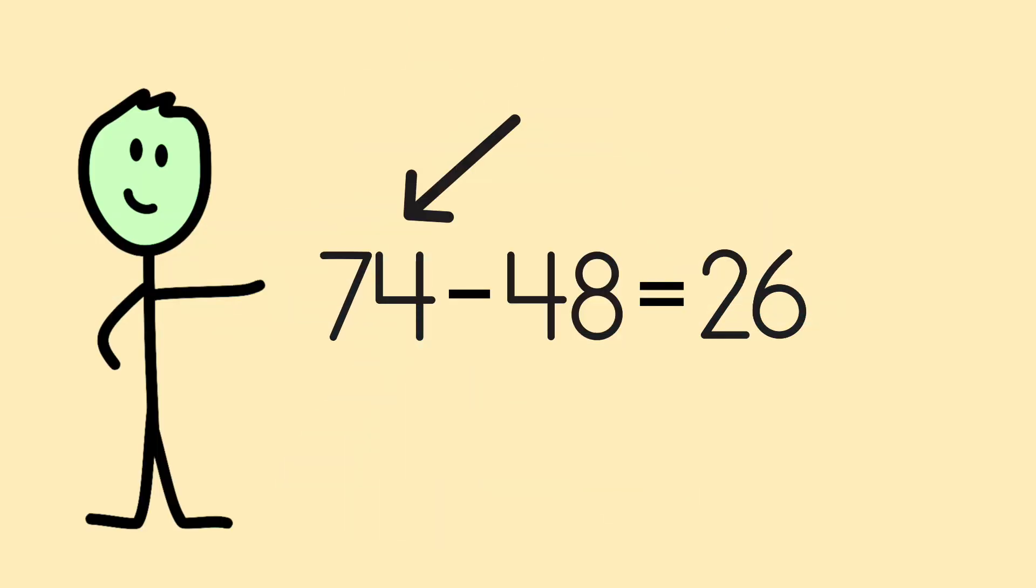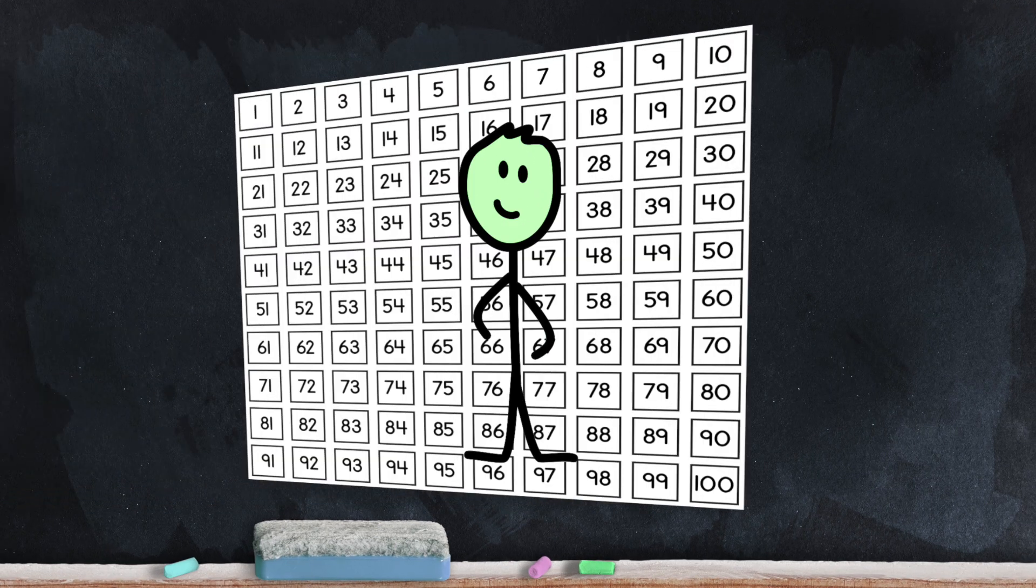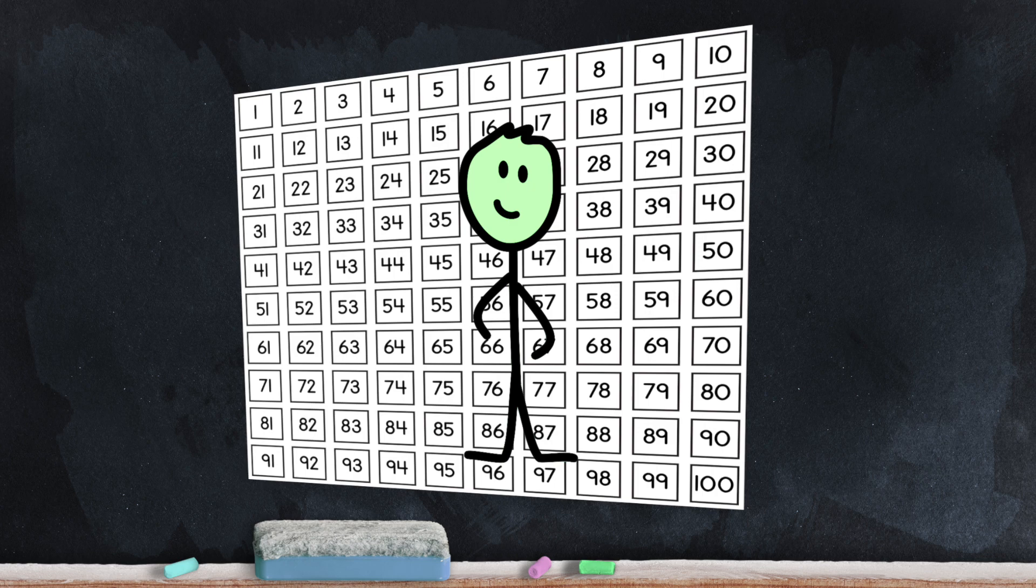74 minus 48 is 26. Well, there you have it. Kelvin subtracted two-digit numbers using a hundreds chart and a shortcut. And you can too.